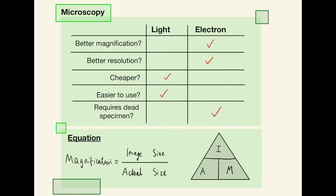There is also an equation linking magnification, image size and actual size. These words may vary — you may see 'real size' instead of 'actual size.' I like to use actual size because it produces the triangle phrase 'I AM' — image size over actual size gives magnification. By creating that little phrase from the equation I've found it sticks a lot easier and you don't have to worry about remembering it.